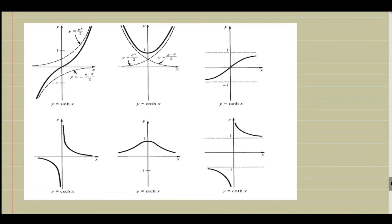We can also look at the graphs. Here we have the graph of sinh x, which takes the value 0 at x = 0 and increases on both sides. We also see graphs of cosh x, tanh x, cosech x, sech x, and coth x. You can compare these with the trigonometric function graphs to see the differences.